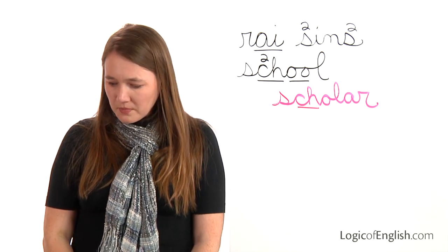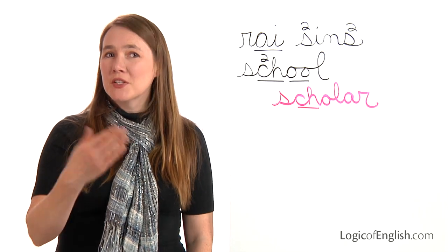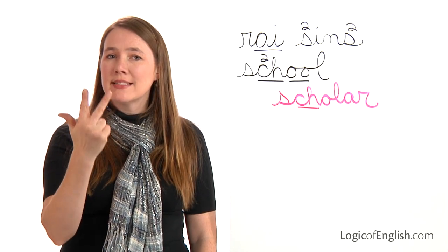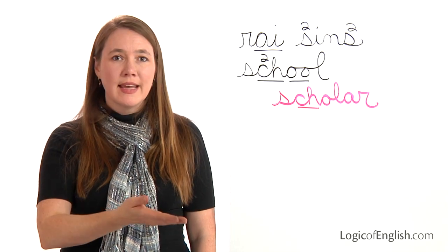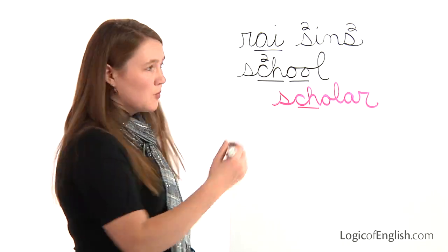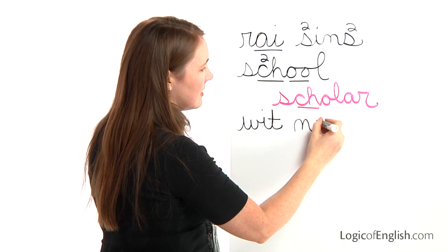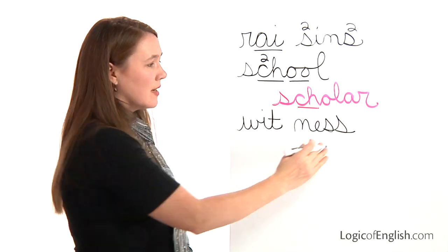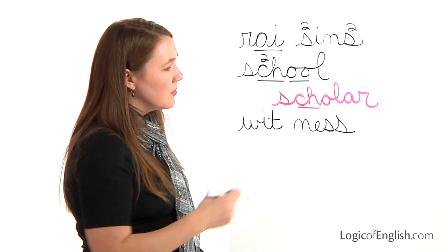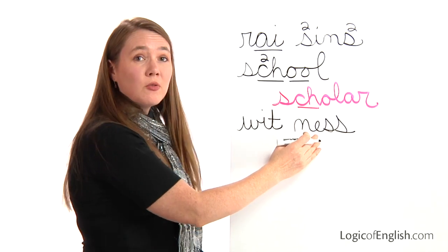The next word is 'witness.' The witness to the crime will testify today. Two syllables: first is 'wit' — W, i, t; second is 'ness' — N, e, s, s. Help me write it: W, i, t — N, e, s, s. Notice we doubled the S after a single short vowel — we often double F, L, and S at the end of a base word, only before short or broad vowels.